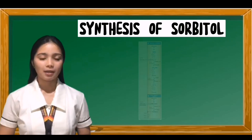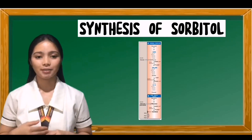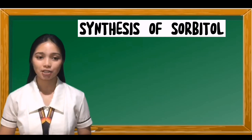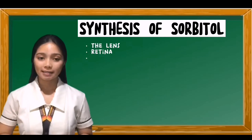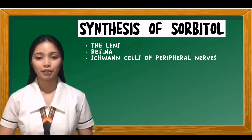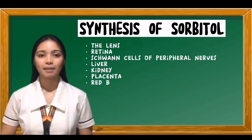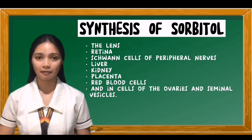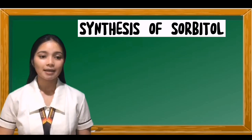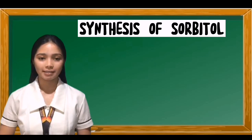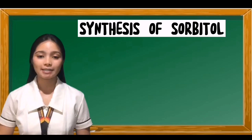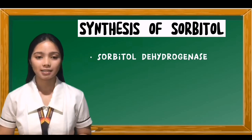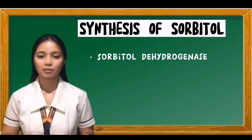The enzyme aldose reductase produces sorbitol from glucose. This enzyme is found in many tissues including the lens, retina, Schwann cells of peripheral nerves, liver, kidney, placenta, red blood cells, and in cells of the ovaries and seminal vesicles. In cells of the liver, ovaries, and seminal vesicles, there is a second enzyme, sorbitol dehydrogenase, which can oxidize sorbitol to produce fructose.